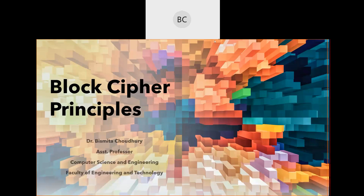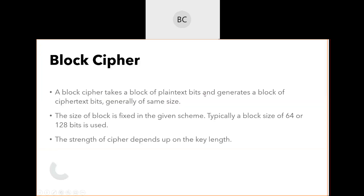Block cipher principle: in a block cipher, we divide our plain text into a certain number of blocks, then we perform encryption on each block and convert it into the same number of cipher texts. So if your input block size is 64 bits, the generated cipher message will also be 64 bits. The strength of any cipher mainly depends on the key strength.